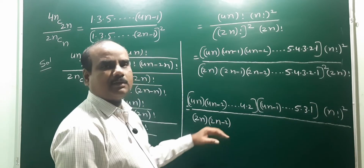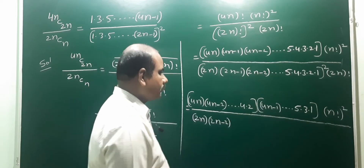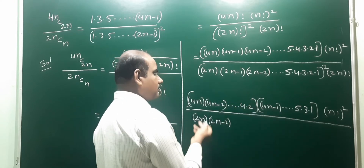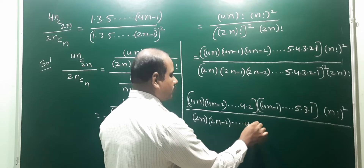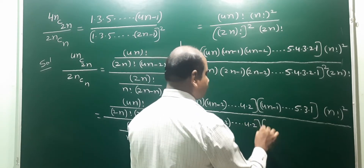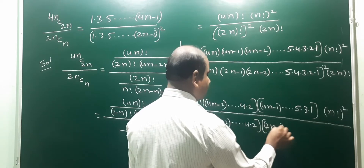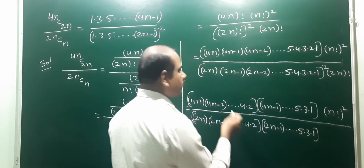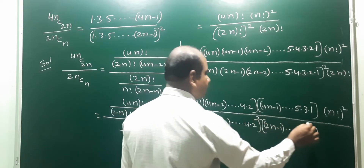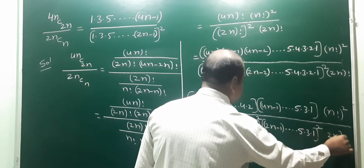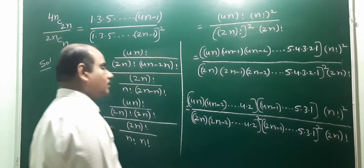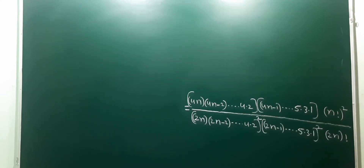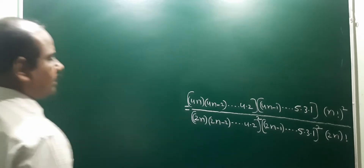We factor 2 from each even term. Separating the 2n factorial into odd and even parts similarly: 2n, (2n-2), ..., 4, 2 are the even terms. Taking 2 common from each bracket gives us 2^(2n) from the even terms of 4n!, and the odd terms remaining are 1·3·5···(4n-1) and 1·3·5···(2n-1) squared.